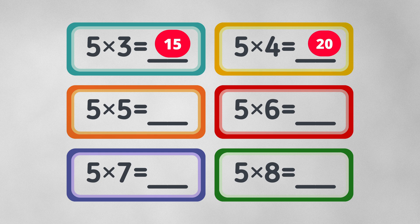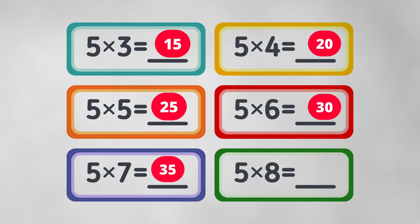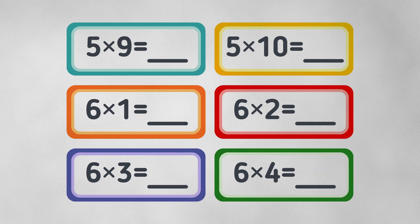Five times five equals twenty-five. Five times six equals thirty. Five times seven equals thirty-five. Five times eight equals forty. Five times nine equals forty-five. Five times ten equals fifty.